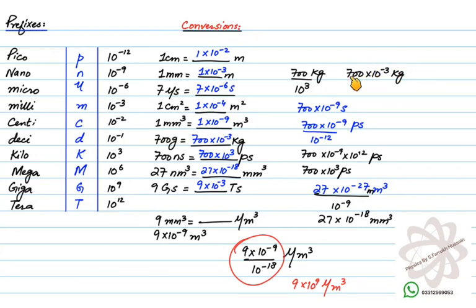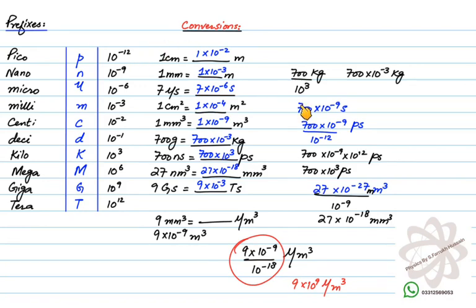Converting 700 nanoseconds to picoseconds: first, eliminate nano — 700 ns = 700×10⁻⁹ s. Now to add pico (10⁻¹²) to the unit, divide the magnitude by the value of pico. So it becomes 700×10⁻⁹ divided by 10⁻¹².